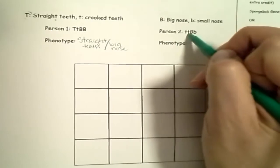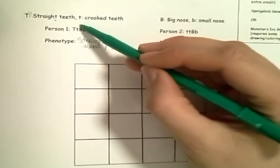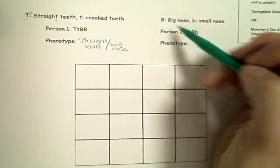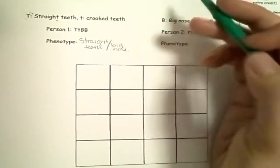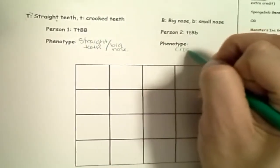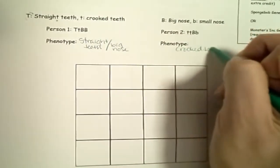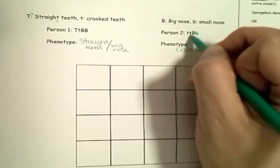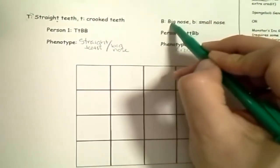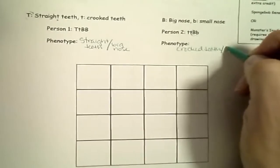Person number two: little t, little t. They have two recessive alleles, so that is going to be expressed — they have crooked teeth. What about their nose? Big B, little b. Dominant is big nose, so they're going to have a big nose.